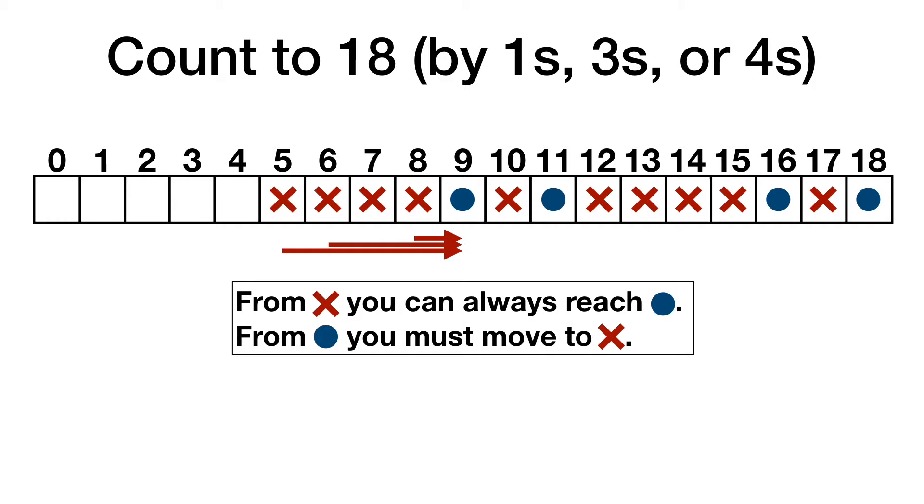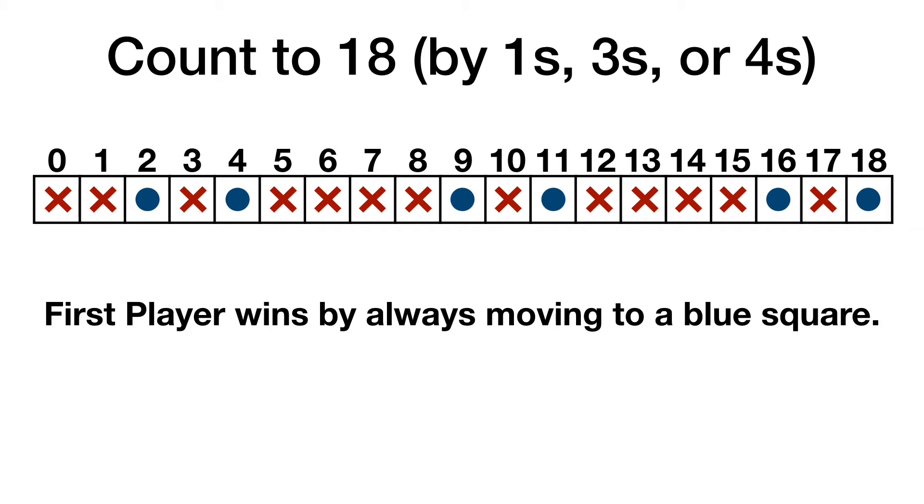We can reach 9 from 5 and 6, so they get Xs. From 4, we have to move to an X. And from 0, 1, and 3, we can reach 4. While from 2, we would have to move to an X. So the final conclusion is that the first player wins.